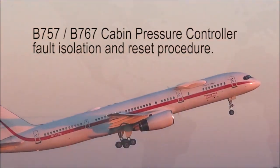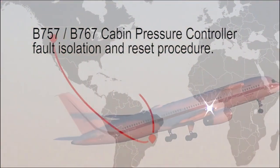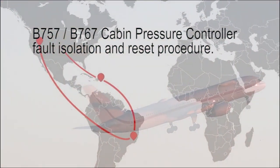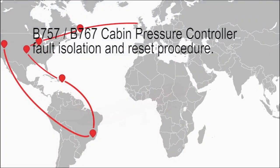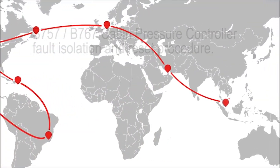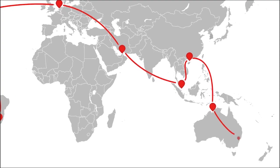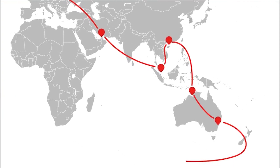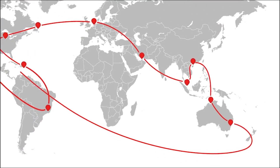The Cabin Pressure Control System, or CPCS, supplies a safe, comfortable environment for the crew and passengers throughout the aircraft flight. The CPCS controls the flow of conditioned air supplied by the Environmental Control System.